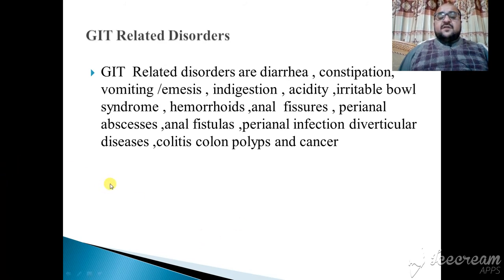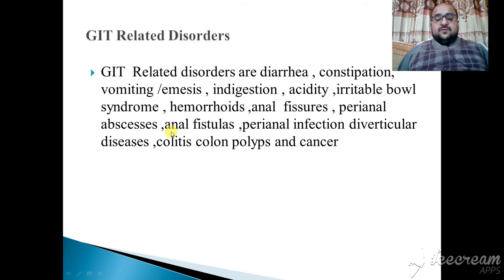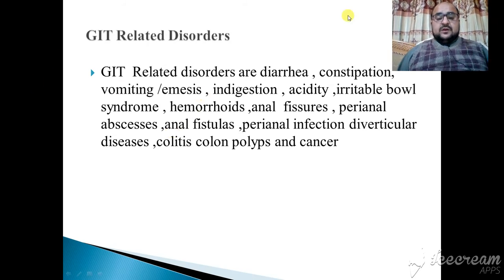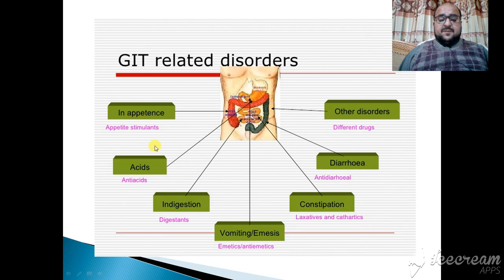There are some gastrointestinal tract-related disorders. For example: diarrhea, constipation, vomiting, nausea, indigestion, dyspepsia, acid reflux, irritable bowel syndrome, hemorrhoids, anal fissure, perianal abscess, anal fistula, perianal infection, diverticular disease, colitis, colon polyps, and cancer. All these are gastrointestinal-related diseases. In case of any abnormalities, there may be chances of developing these conditions, which are very common in our society today.